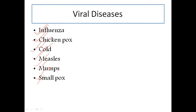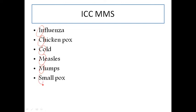So let's see the trick. I have taken all the starting letters here: I for Influenza, C for Chickenpox, C for Cold, M for Measles, M for Mumps, and S for Smallpox. I have added all this into a word.